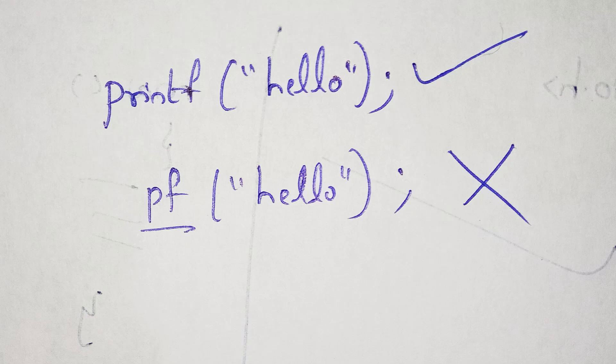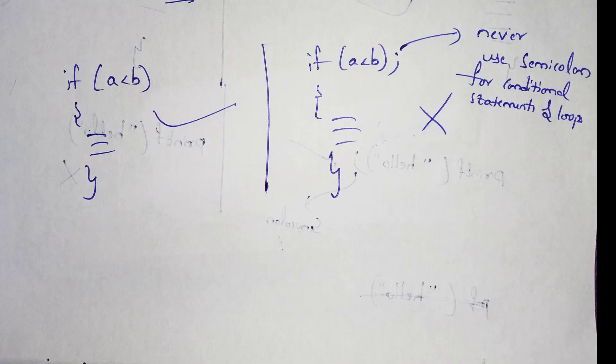Some students use shortcuts like writing 'pf' instead of printf and 'sf' instead of scanf — don't write like that. Write spellings correctly without any mistakes. Also, do not use a semicolon for the main function, for conditional statements like if, else-if, and switch, or for loops like while, do-while, and for loop. Before writing the exam, definitely remember these points.